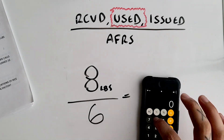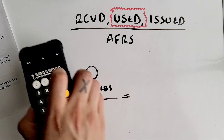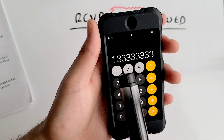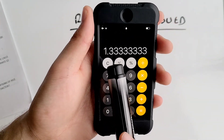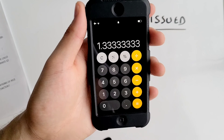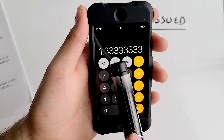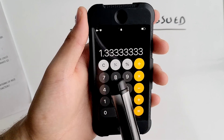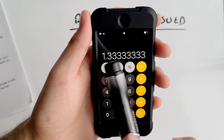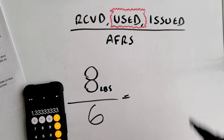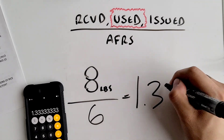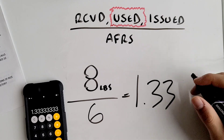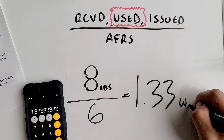Divide eight by six, which equals 1.33333. We always round to the hundredths place — two numbers after the decimal. If the third number is five or above, round up; four or below, leave it. In this case we leave it, so your working factor is 1.33. That's your final answer.